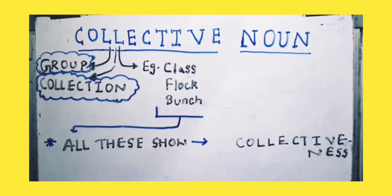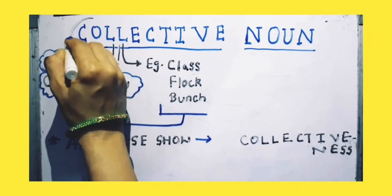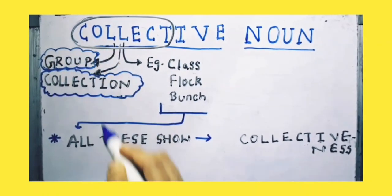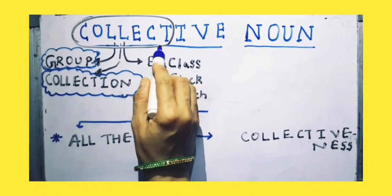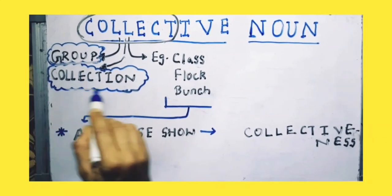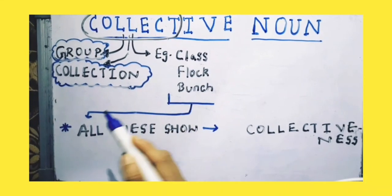Now to understand it in a broad way, look at this word. This is collect. What does it mean children? It means this is a group, this is a collection of person, place or things.